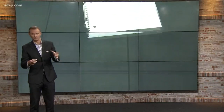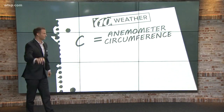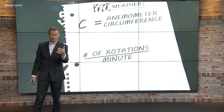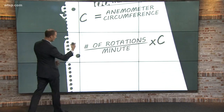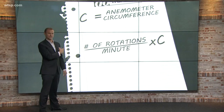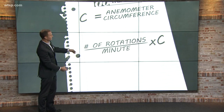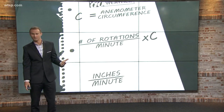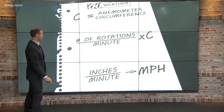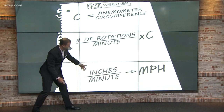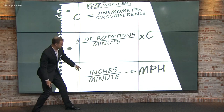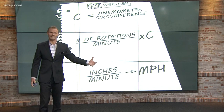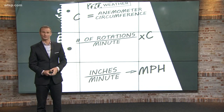So how does that work? Well, a little math for you this morning. If we find the circumference of the anemometer, which we'll call C, and you're able to count — which is all done by a computer within the anemometer itself — the number of rotations that occur within a minute and then multiply that by the circumference, you're able to get the inches it travels every minute. You're then able to calculate that to be the miles per hour that the wind is blowing.